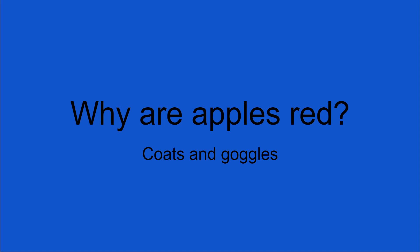Welcome, anthocyanins. These are water-soluble pigments that change colour in different pHs or acidities. They can turn purple, red, blue, or black. So that's why apples are red.